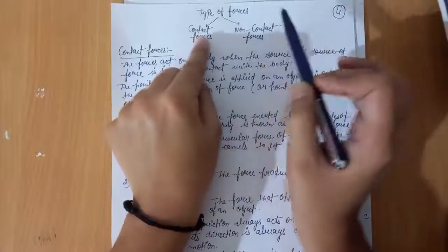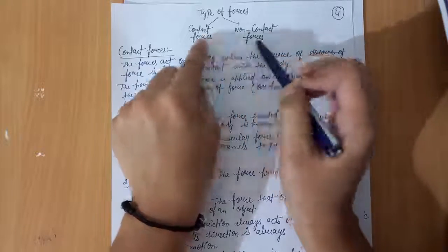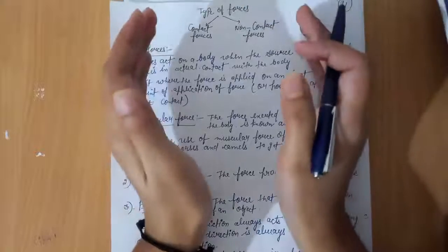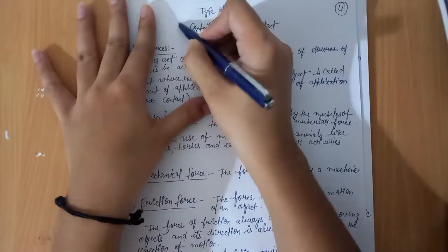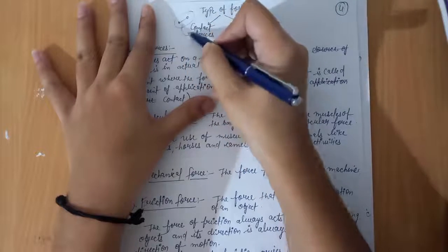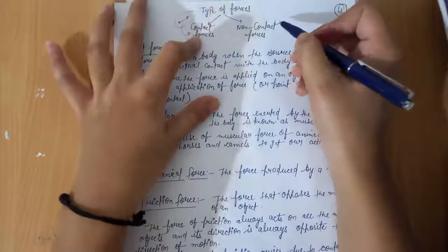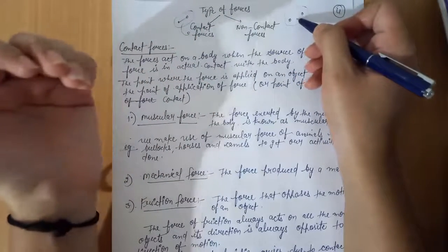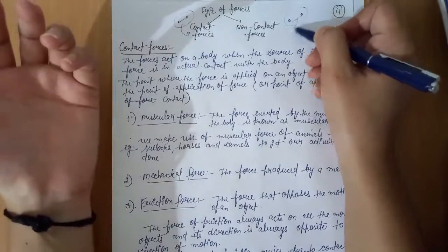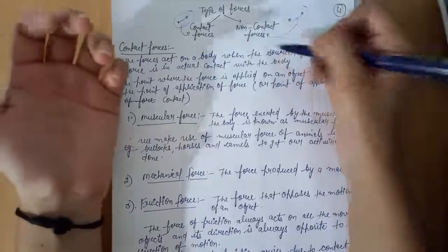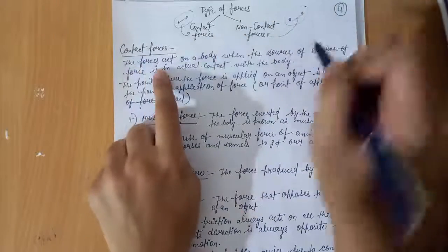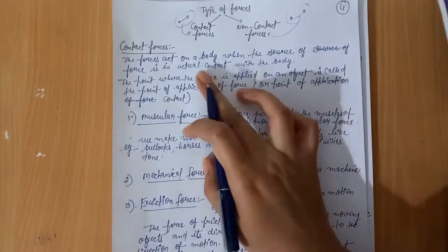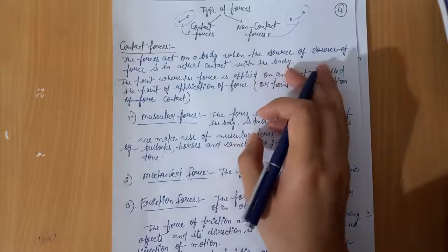Forces always act between pairs of objects. Contact force means when two objects are in contact with each other, a contact force acts. Non-contact force is created between objects that are not in contact. The force acts on a body when the source of force is in actual contact with the body.